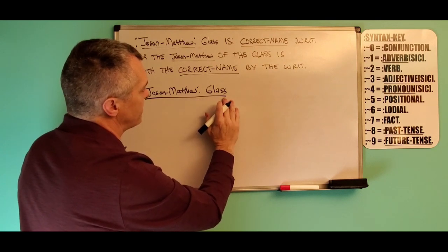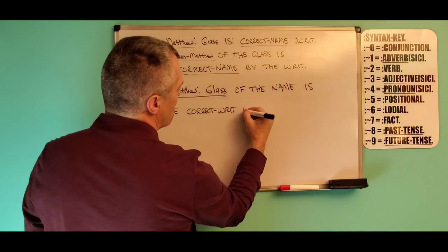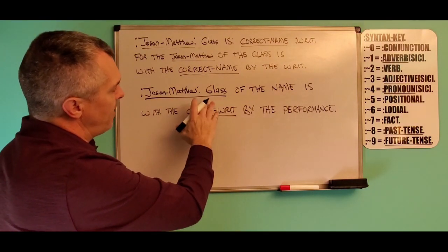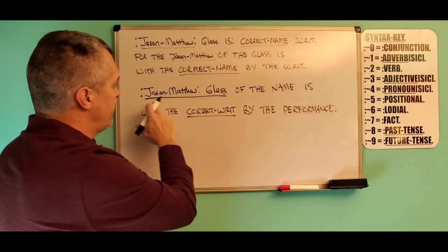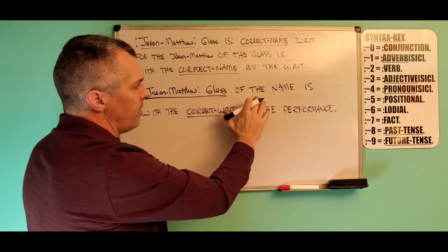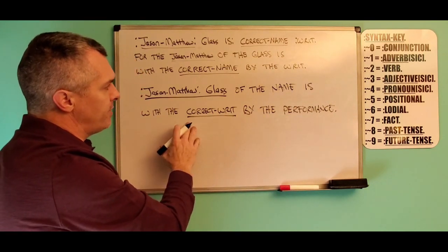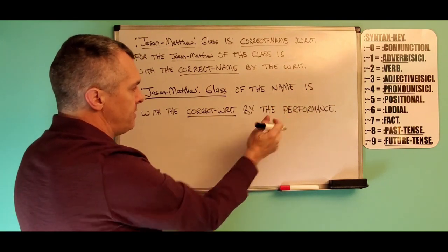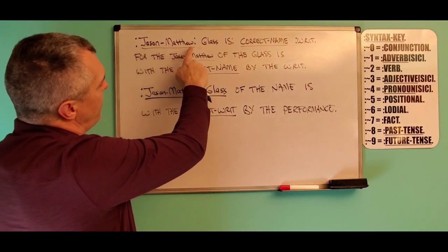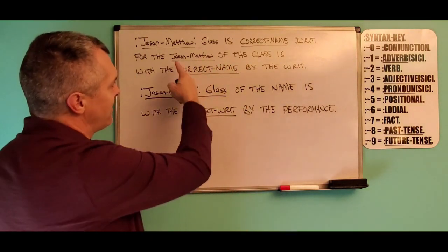This entire underlined thing would be your cause — for the Jason hyphen Matthew of the glass. Now we can put a concern in there. We have for the Jason colon glass, Jason Matthew colon glass of the name. This is the cause: the Jason hyphen Matthew colon glass in its entirety. What is it concerned with? The name. Now we put our verb in possessive — the correct writ is possessing the name and the authorities by this performance.